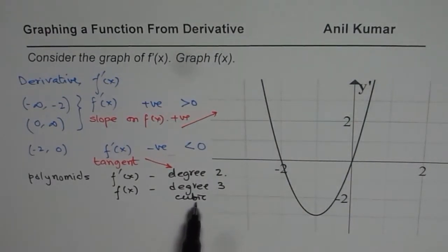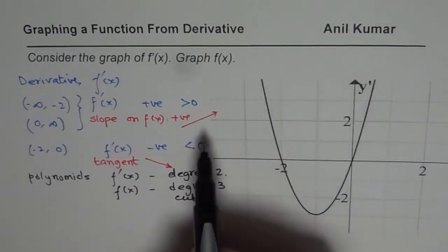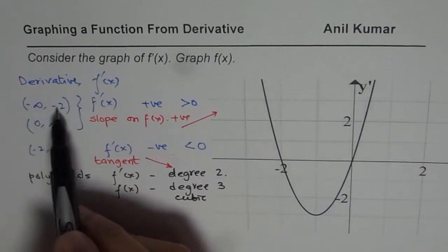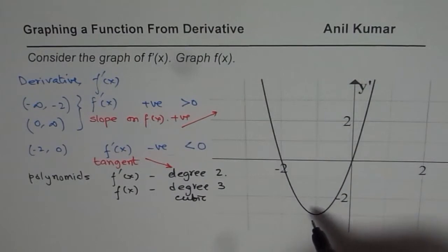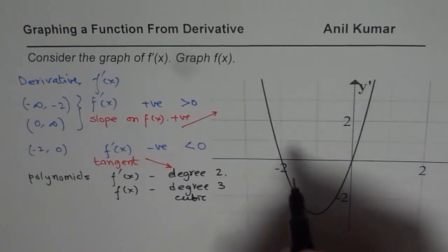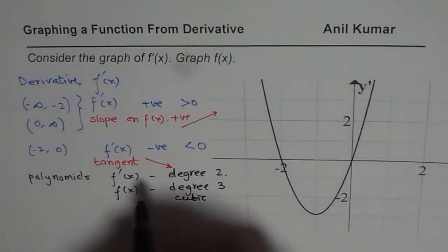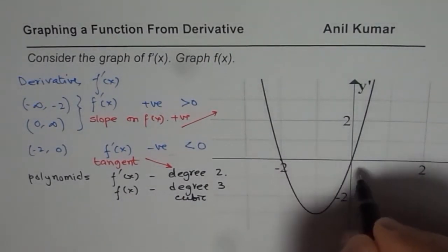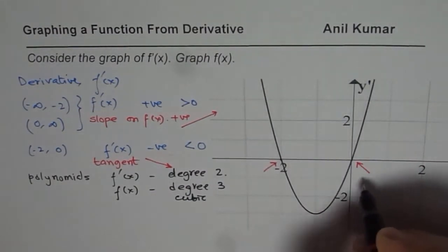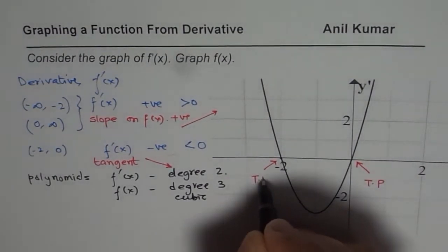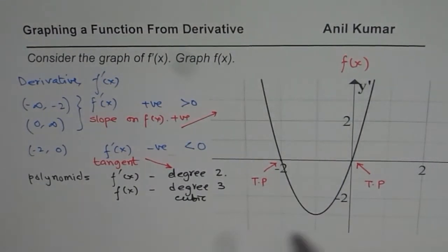What we know here is that the cubic function has a positive slope during the interval minus infinity to minus 2, so it is increasing. At the point minus 2, it is 0. So minus 2 is a turning point on f(x). These two points are the turning points on f(x), where derivative is 0.